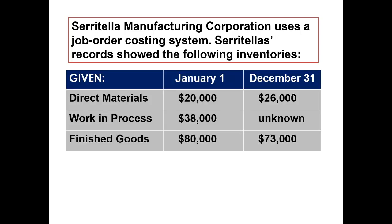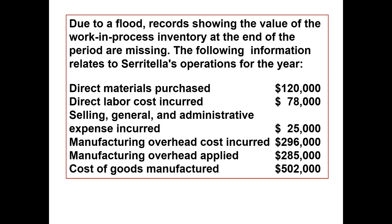Saratela's records show the following inventories. Beginning direct materials were $20,000 and ending $26,000. Work in process to begin with was $38,000, and at the end of the year the balance is unknown. Finished goods were $80,000 at the beginning of the year and $73,000 at the end of the year.